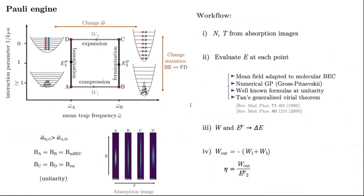This is the cycle we propose. We start with a molecular condensate at point A. We compress the trap in the first work stroke from A to B. Then, from B to C, we break the molecules and we effectively change the statistics. Then, from C to D, we expand the gas in the second work stroke. And, finally, we close the cycle with a new magnetic field sweep that rebuilds the molecules from D to A. At each one of these points, we get this kind of absorption images. And, from those absorption images, we can extract the thermodynamic information, such as, for example, the number of particles. And, with that, we can compute the energy.